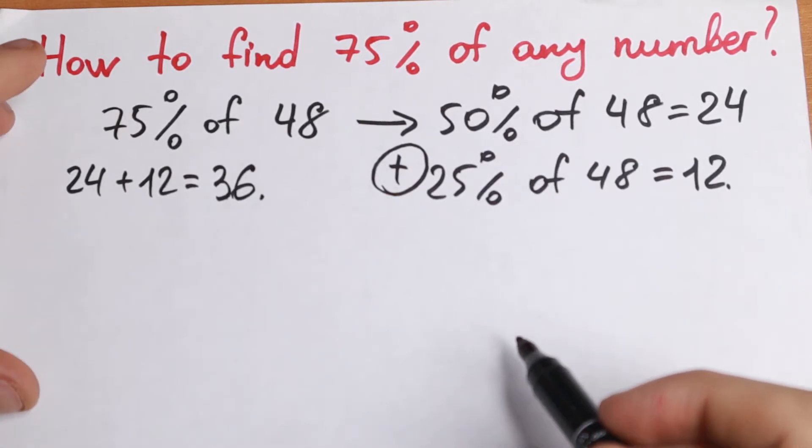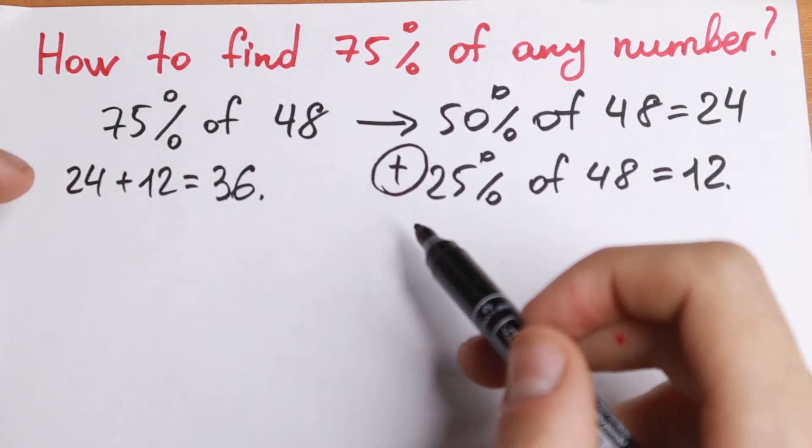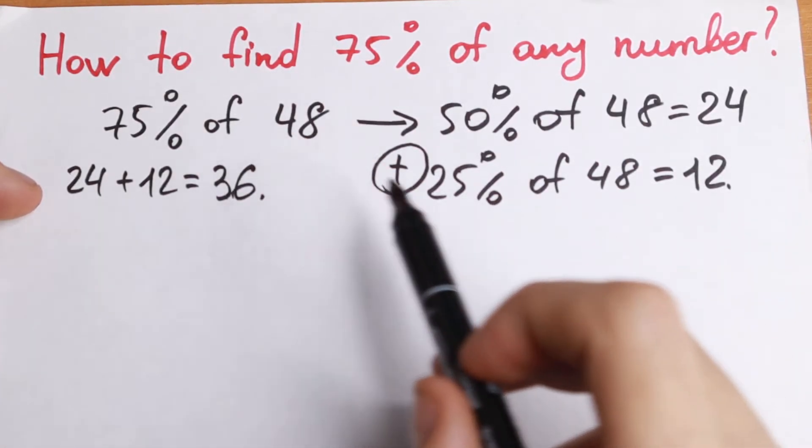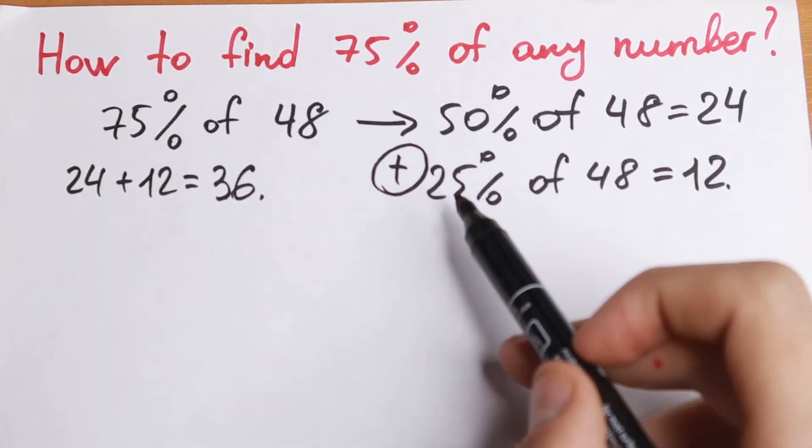And there is a second rule, I will show this rule later. But I use this rule when this number is not good to divide in, it is not good to find this 50 and 25%.